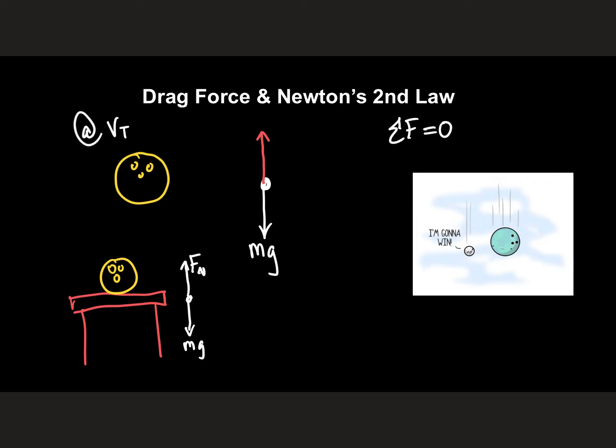Because remember, normal force is the force that opposes an object touching a surface. So here's a surface. But when an object is in free fall, there's not a surface. So what is pressing up on it? And the answer is that drag force, or it's that fluid. So what's posing upwards? It's the force of drag.